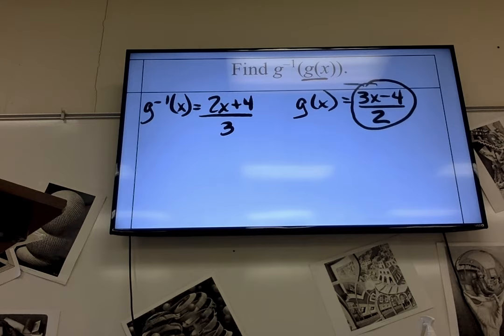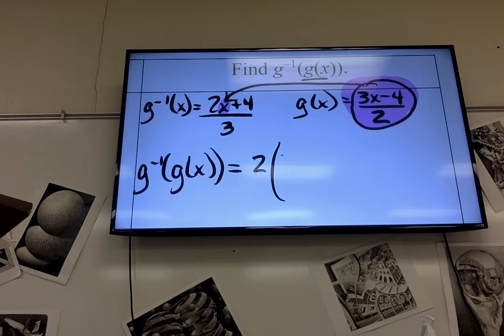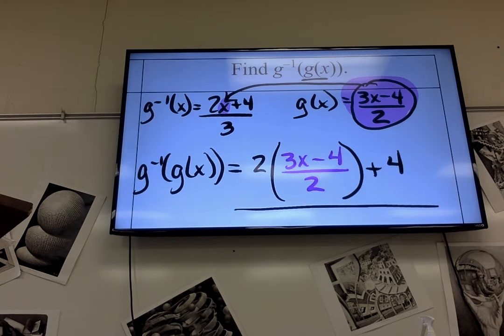So, I'm going to put g of x. So, that's 3x plus minus 4. Sorry. Sorry. I'm going to put right there for the x. g inverse of g of x plus 2 times 3x minus 4 over 2. All I'm doing is replacing the x with what's pink. Then, plus 4 all over 3.